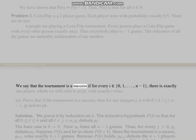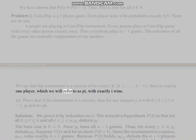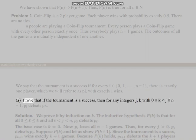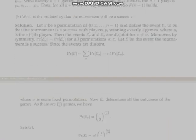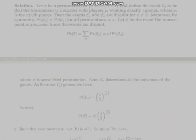We say that the tournament is a success if for every i equals 0, 1, up to N minus 1, there is exactly one player, which we will refer to as P_i, with exactly i wins. Part (a): Prove that if the tournament is a success, then for any integers j, k with 0 ≤ k < j ≤ N-1, P_j defeats P_k. Part (b): What is the probability that the tournament will be a success?